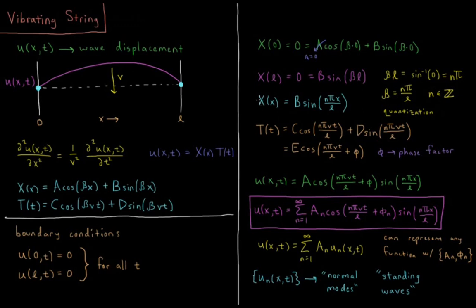So we have now that the spatial part equals B sine n pi x over L. We know that beta equals n pi over L, so now our time part is C cosine n pi v t over L, substituting in beta for beta v t, plus D sine n pi v t over L. Whenever we have a situation like this where we have a cosine and a sine but they're of the exact same argument, we can fix this by developing a phase factor.